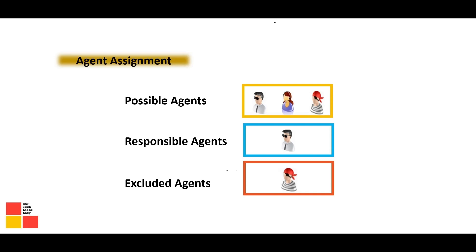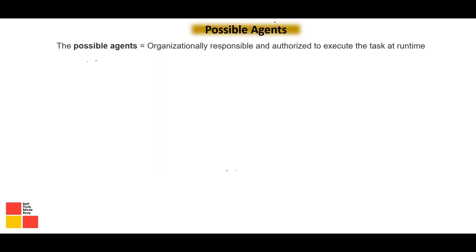Agents are of different types: possible agents, responsible agents, and excluded agents. Possible agents are whoever has authorization or is organizationally responsible to take the action on the work item. Responsible agents are those who are defined to take the action on the work item. Once a responsible agent takes the action on the work item, they come under the category of actual agents. Excluded agents will not receive the work item in their inbox and are not supposed to take any action.